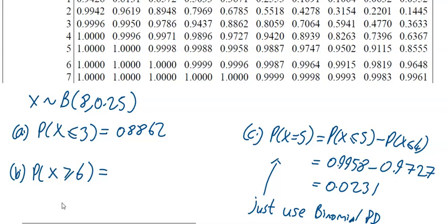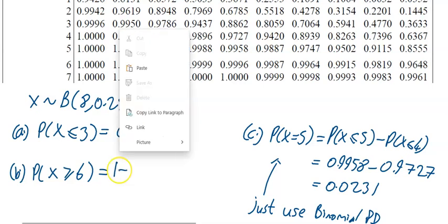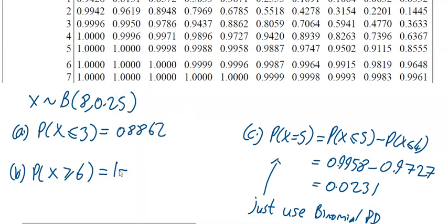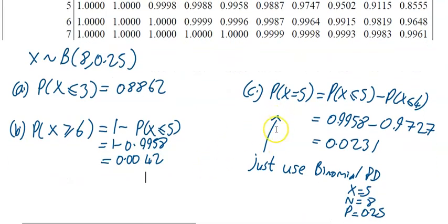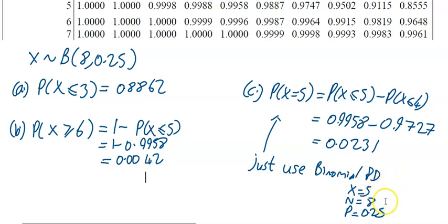For part b, we need P(X ≥ 6), which equals 1 minus P(X ≤ 5). That gives 1 minus 0.9958, which equals 0.0042. For part c, P(X = 5) can be done via tables as P(X ≤ 5) minus P(X ≤ 4), but it's much easier on the calculator using binomial PD with x equals 5, n equals 8, and p equals 0.25.